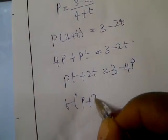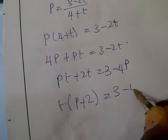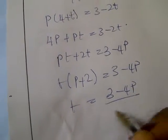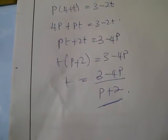Then T into P plus 2 equals to 3 minus 4P. Then your T will be 3 minus 4P over P plus 2. That's it for question number 24.